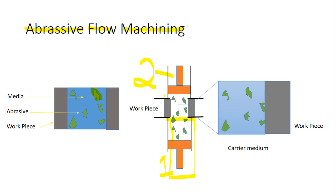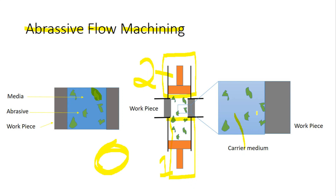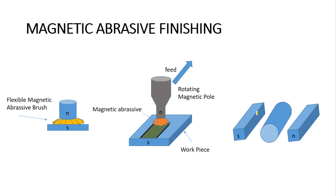The two piston arrangements are connected to the workpiece, which is of a cylindrical ring shape, and the surface being machined is the internal side. In the magnified view, the blue part is the carrier medium with abrasive particles suspended in it. When the medium moves, these abrasive particles rub against the workpiece and very small chips are produced — very small material removal happens here.